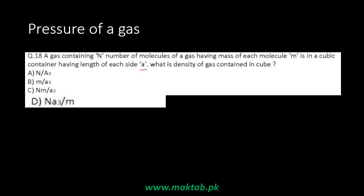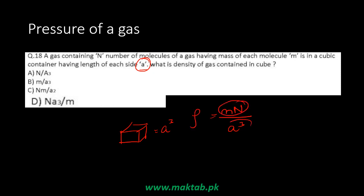Now for an MCQ on the density of gas: density equals total mass over total volume. Total mass is the number of molecules N times the mass of each molecule m, divided by volume, which is the cube of the side length a³. So density = mN/a³. Looking at the options, the correct expression has m × N in the numerator and a³ in the denominator.